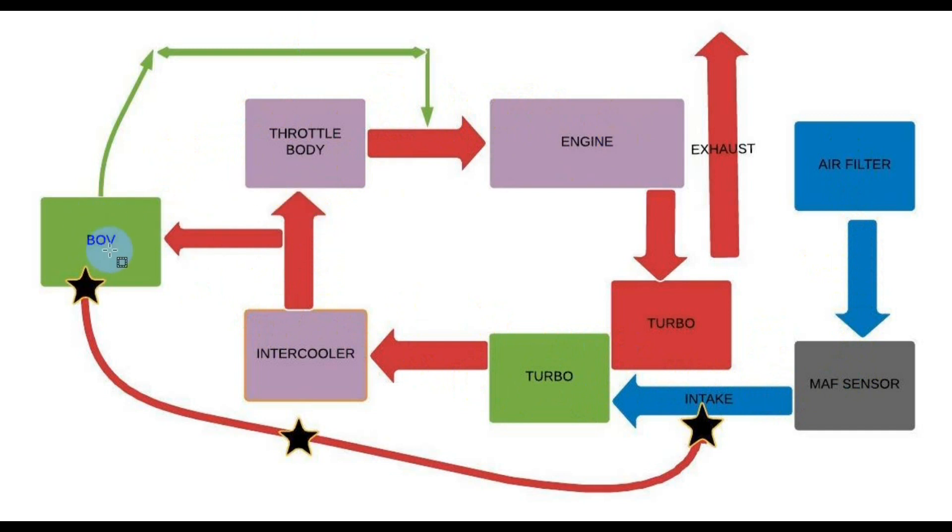And then the BOV is going to be mounted either between the turbo and the intercooler or between the intercooler and the throttle body. When the throttle body is closed, we get a vacuum here which opens the BOV, which opens the blow-off valve, which then will either release the gas back into the intake on a recirculating type or release it to the atmosphere on an atmospheric type.